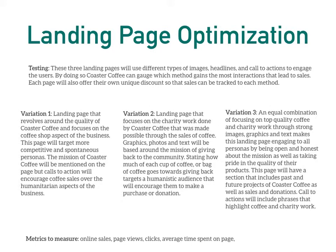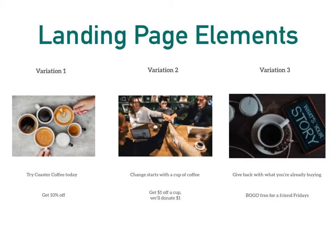The metrics to measure on these pages will be online sales, page views, clicks, and the average time spent on the page. The landing page elements for variation one will have strong graphics and visuals of coffee and people interacting with coffee. The call to action would be something like 'Try Coaster Coffee today,' and their promo code will feature a 10% off coupon.